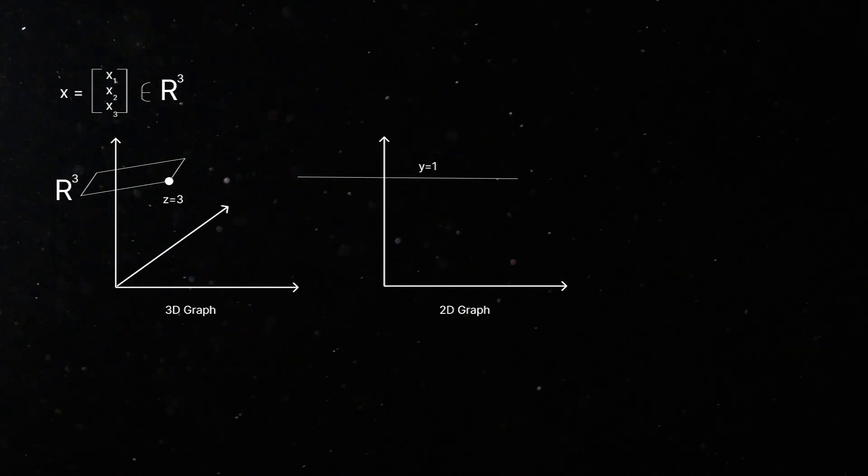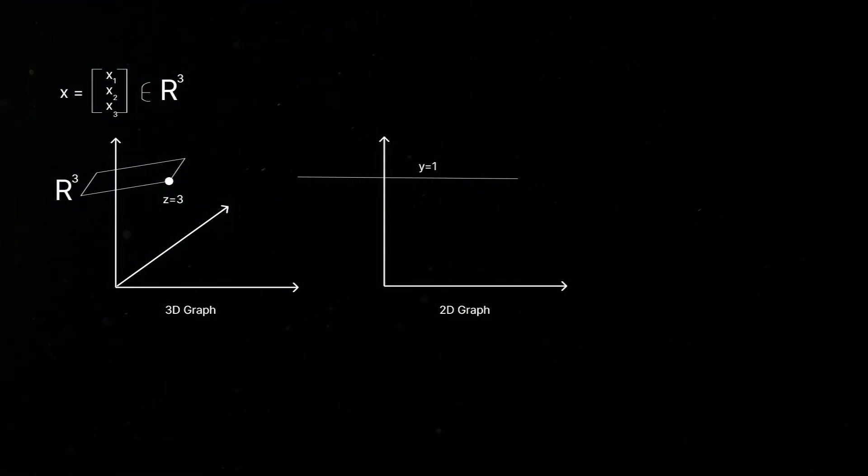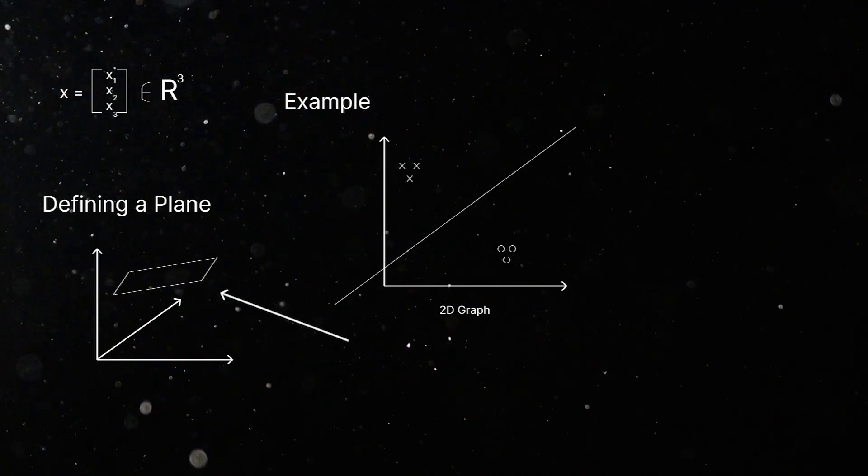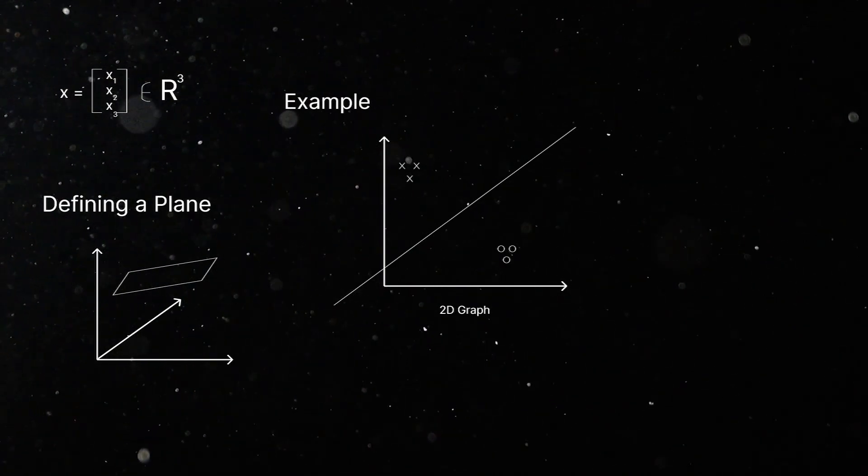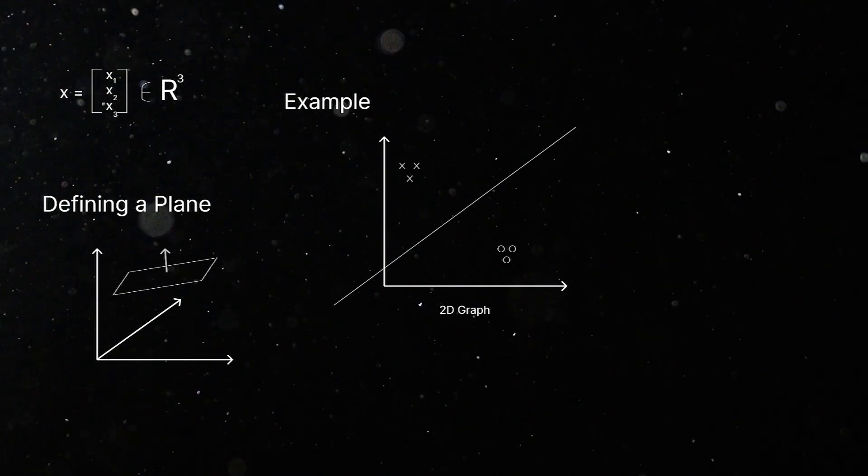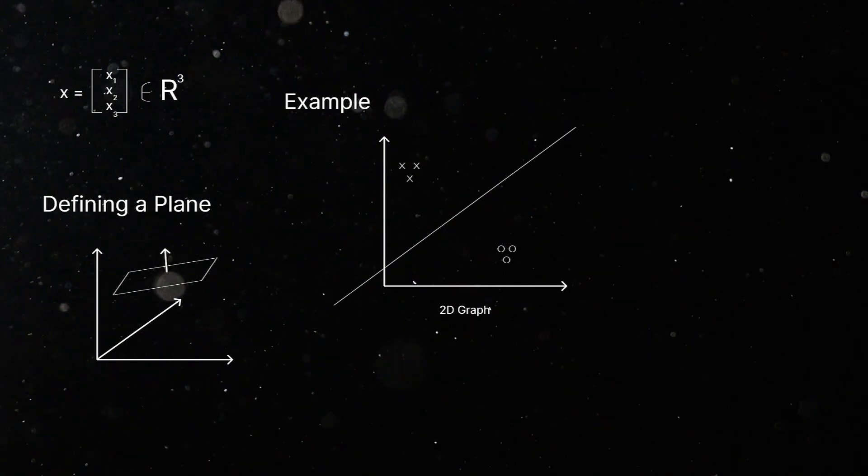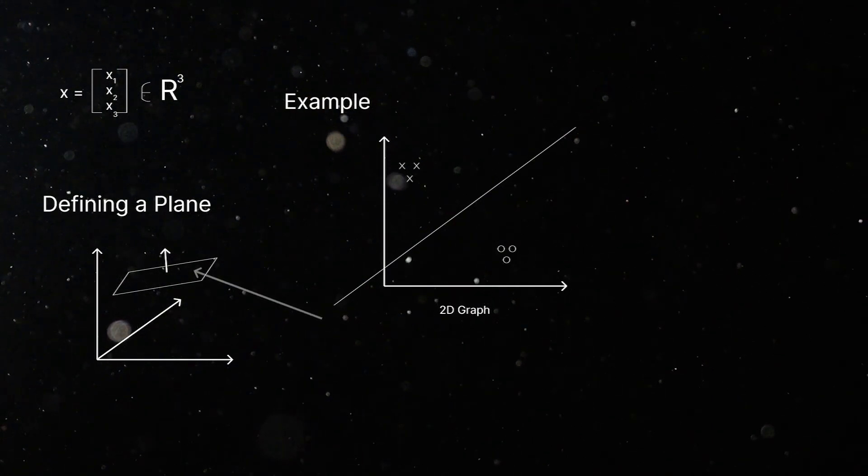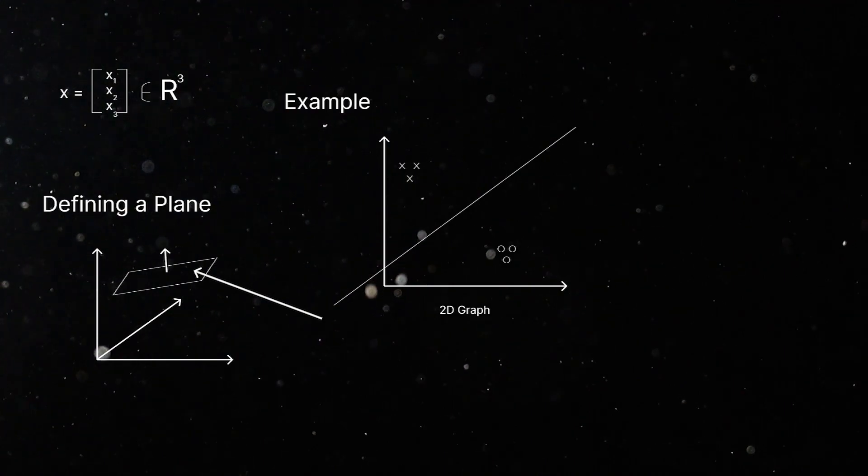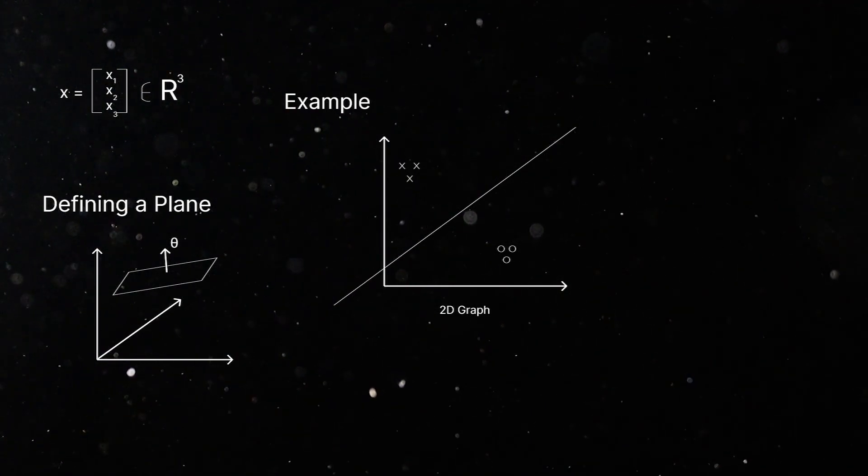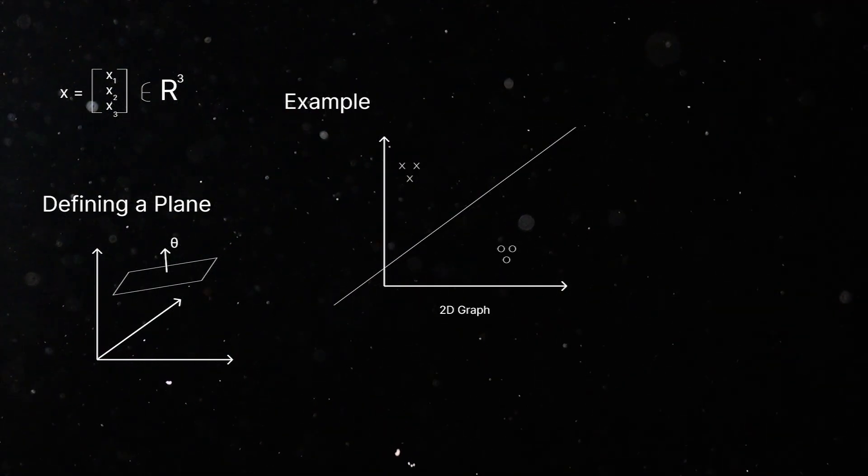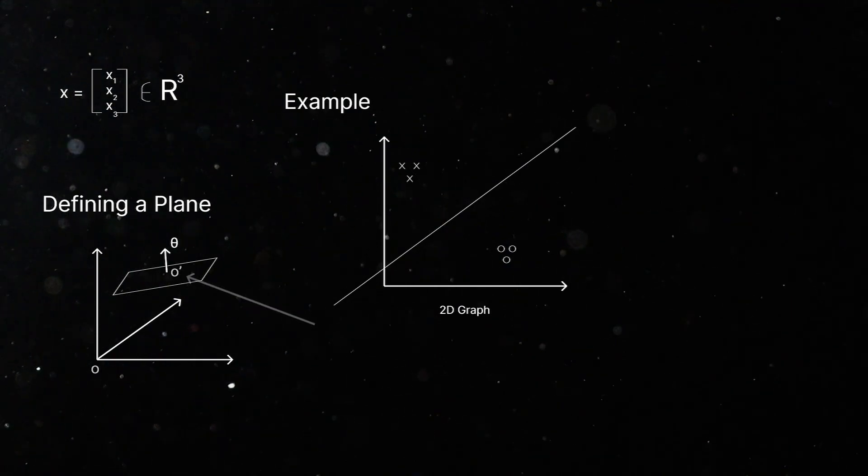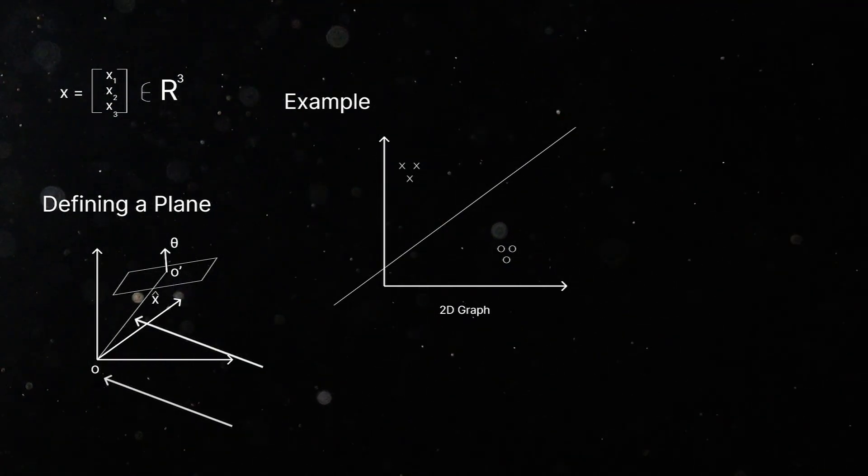So, let's say if we have a plane in three dimensions, let's draw it over here. We define this plane as having a normal, as in some vector here, which we're going to be perpendicular to all of the other points which fall on this plane. So, let's call the vector of this normal θ. Additionally, this plane has an offset from the origin. So, it's here, o prime. This is o. And this is its offset. Let's call this x̂.